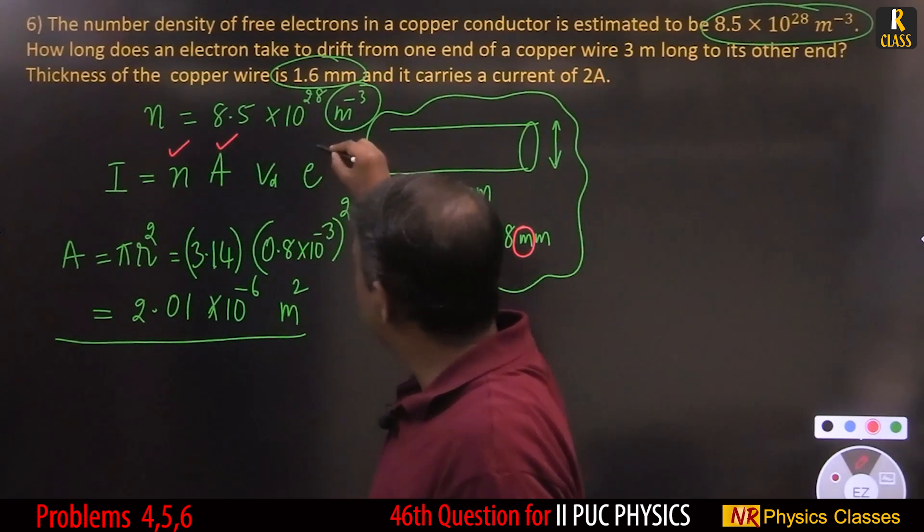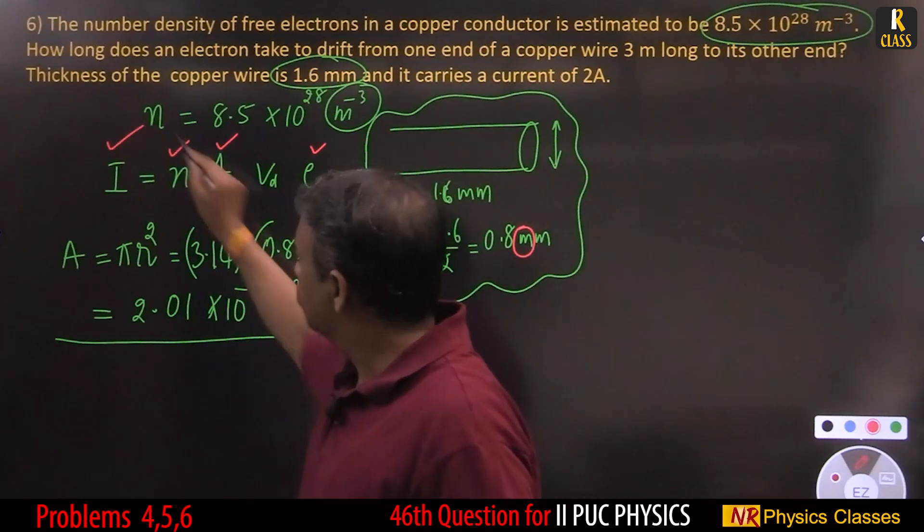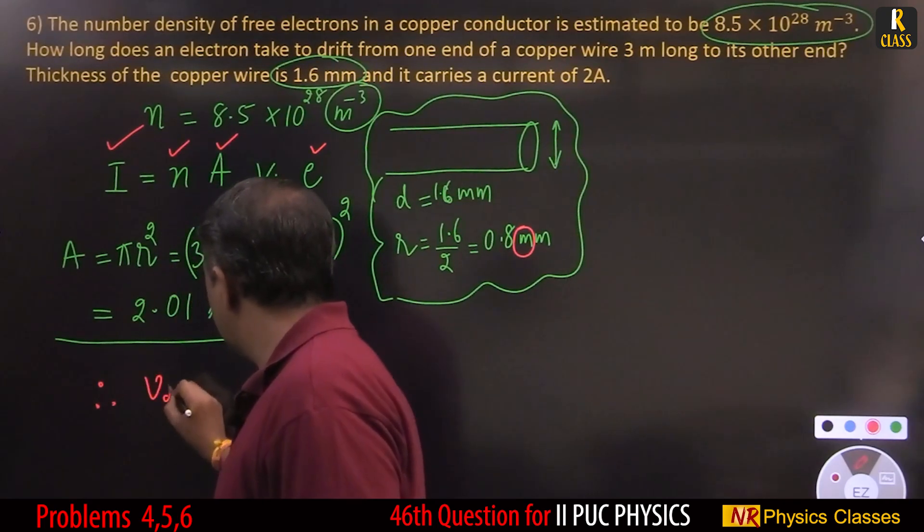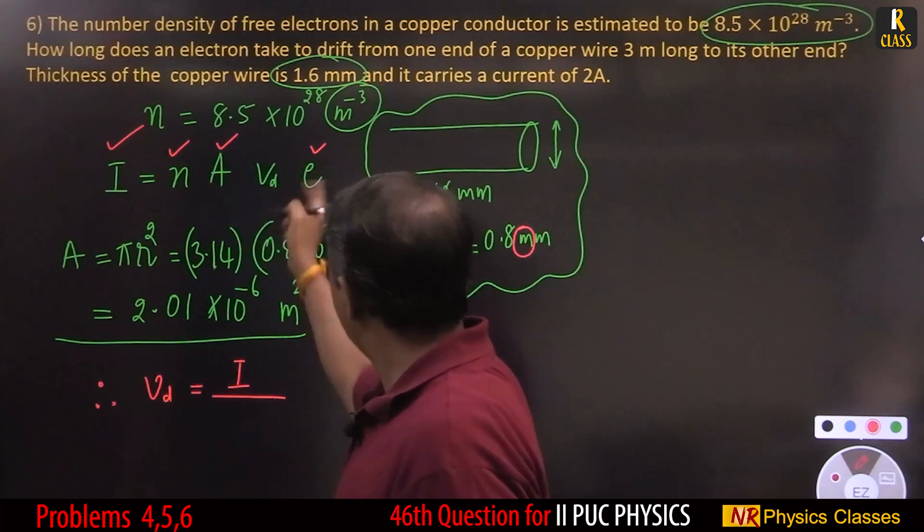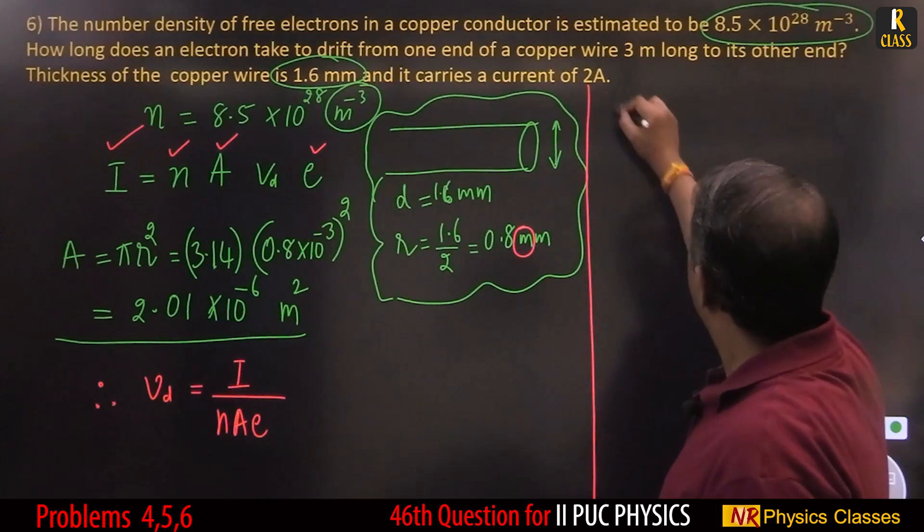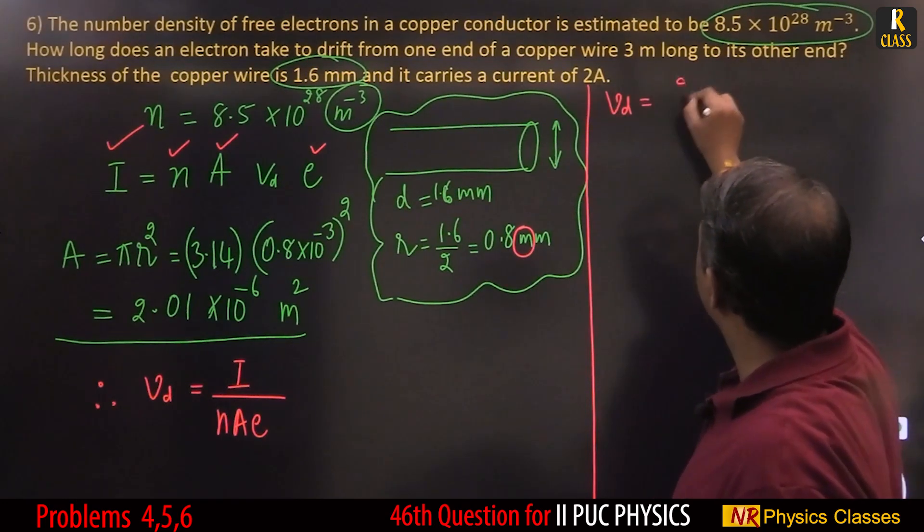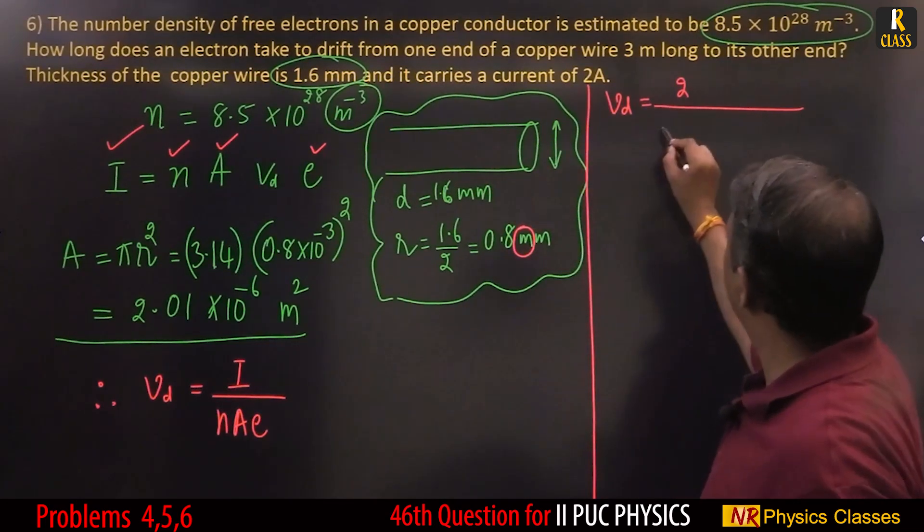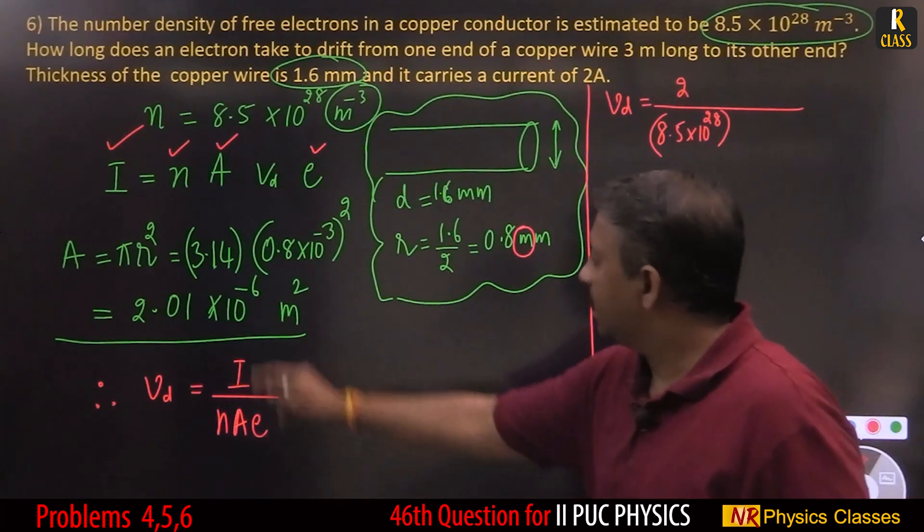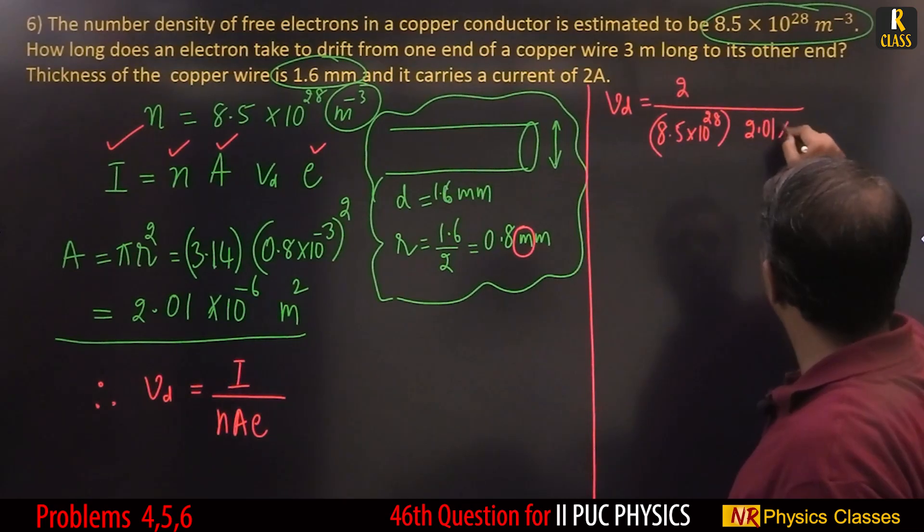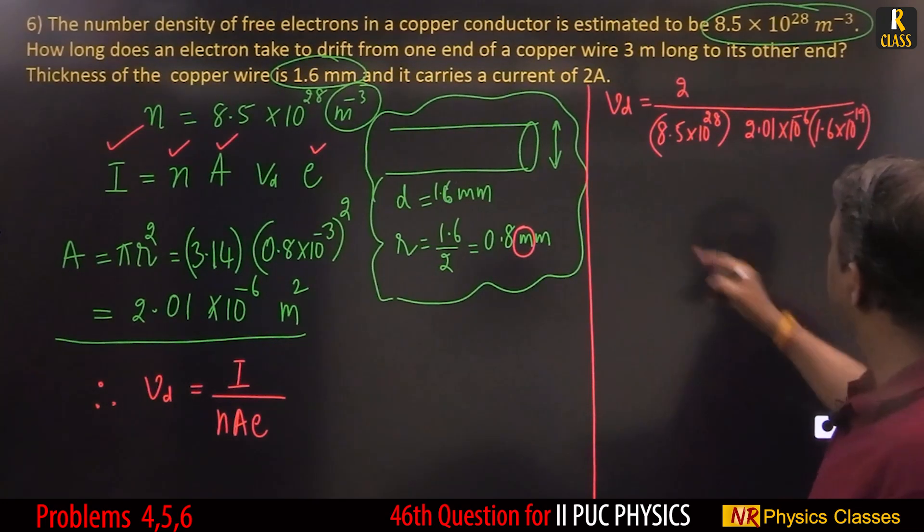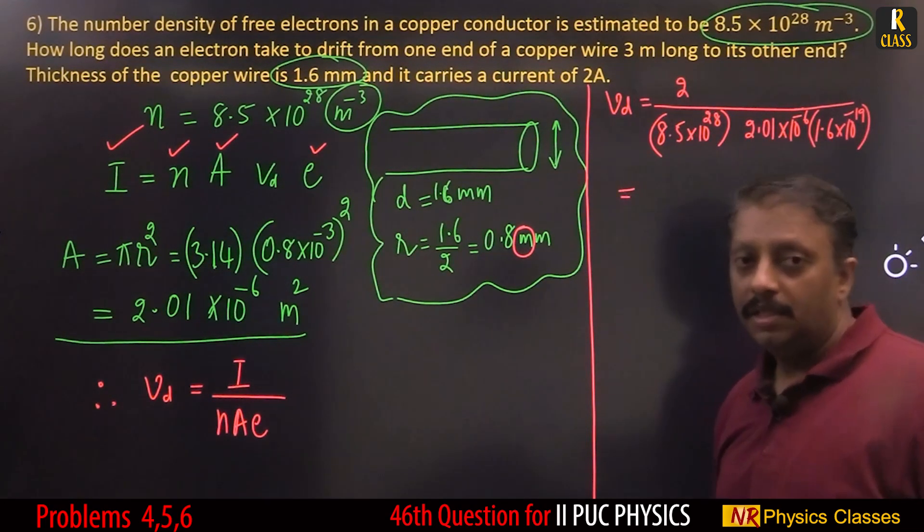Students will forget this milli conversion. Area is found out, so we know N, we know A, we know charge of electron and current is given. Find out drift velocity Vd. Drift velocity equals I by NAe. Current is 2 ampere, number density is 8.5 times 10 to the 28, area is 2.01 times 10 to the minus 6, e is charge of electron 1.6 times 10 to the minus 19. Use calculator.